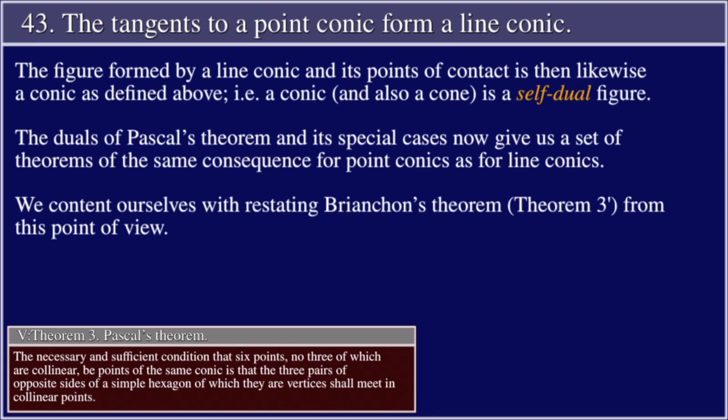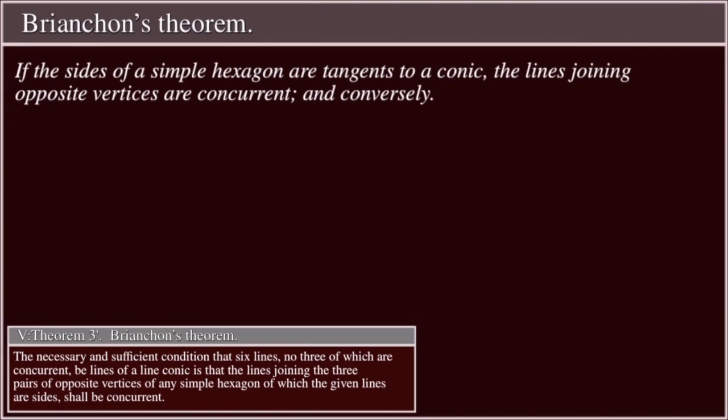The duals of Pascal's theorem and its special case now give us a set of theorems of the same consequence for point conics as for line conics. We content ourselves with restating Brianchon's theorem (Theorem 3') from this point of view: If the sides of a simple hexagon are tangent to a conic, the lines joining opposite vertices are concurrent, and conversely.